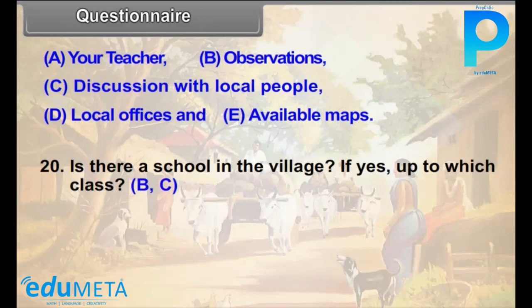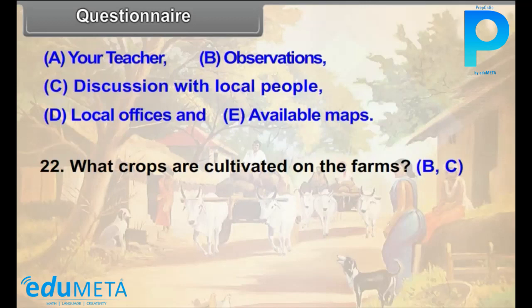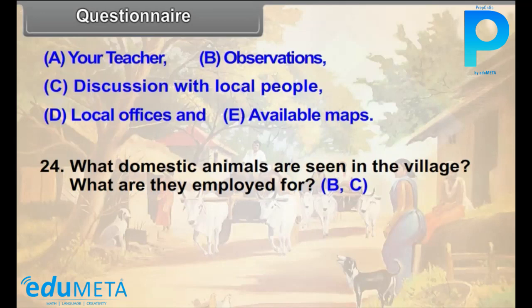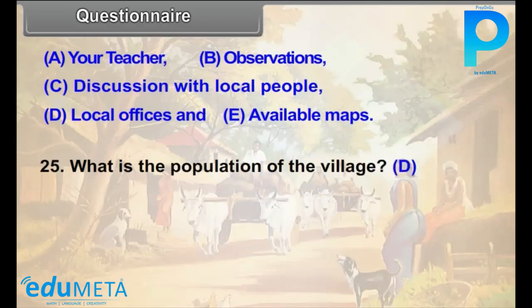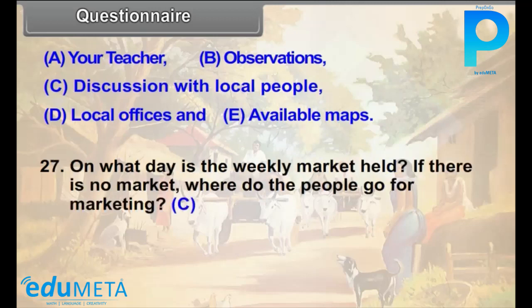Question 21: What means of entertainment are available in the village? (B, C) Question 22: What crops are cultivated on the farms? (B, C) Question 23: What activities subsidiary to agriculture are practiced in the village? (B, C) Question 24: What domestic animals are seen in the village? What are they employed for? (B, C) Question 25: What is the population of the village? (D) Question 26: What shops are there in the village? (B) Question 27: On what day is the weekly market held? If there is no market, where do the people go for marketing? (C)